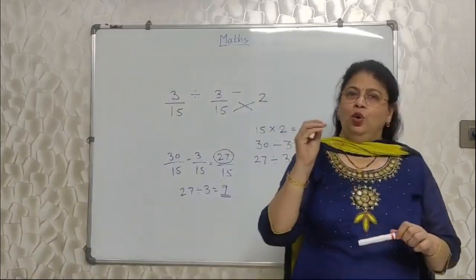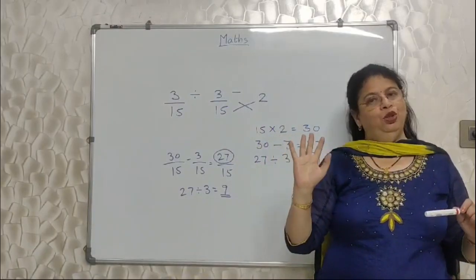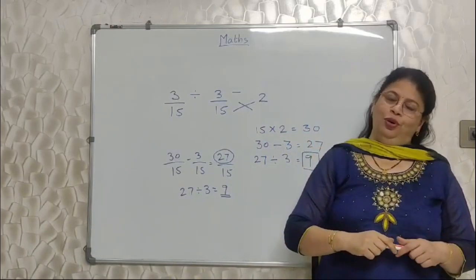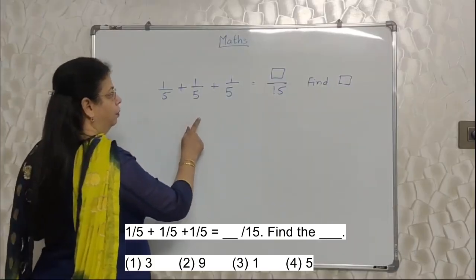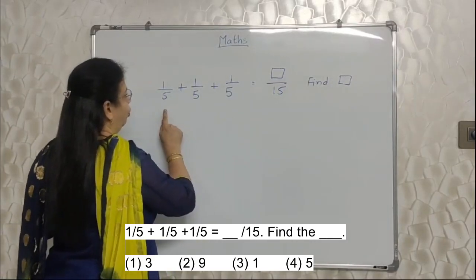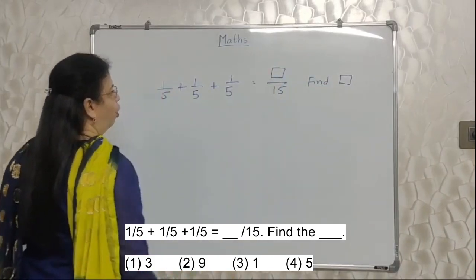2-3 baar dekho ge na, so you will be clear about it. I am sure about it. Chalo, aage badhte hai. Students, the next sum I have written on the board. 1 upon 5 plus 1 upon 5 plus 1 upon 5 is equal to box upon 15. Find the value of that box.